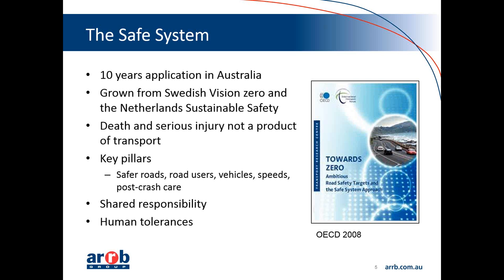The second key point revolves around the key pillars in road safety: safer roads, safer road users, safer vehicles — these are commonly discussed. The pillars also include safer speeds, which is the focus of today's discussions. The Global Action Plan also refers to effective post-crash care as one of the key pillars. It's only when all of these pillars work together that we'll achieve this elimination of death and serious injury.